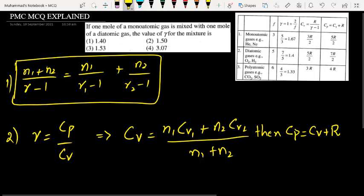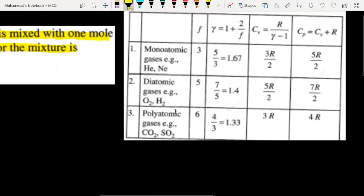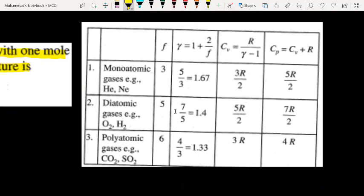If one mole of a monatomic gas is mixed with one mole of a diatomic gas, then the value of gamma for that mixture. Mostly, the main values we have in thermodynamics. Here is a table given. Monatomic is 5 by 3, diatomic is 7 by 5, and polyatomic is 4 by 3. These values you have to remember.